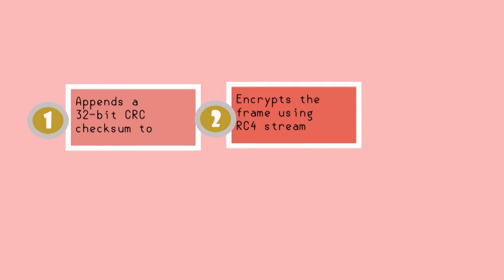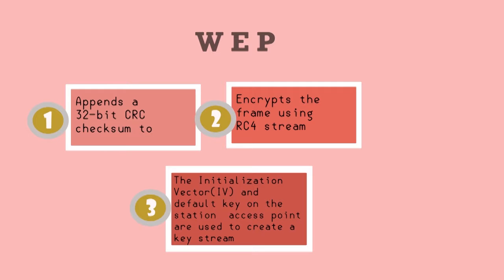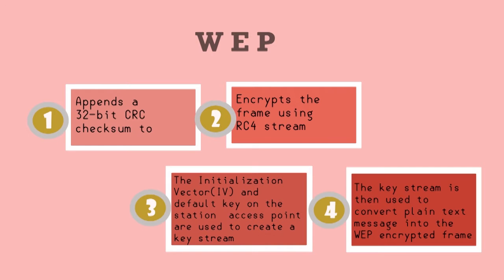Firstly, a 32-bit CRC checksum is appended to each outgoing frame. Secondly, the frame is encrypted using the RC4 stream cipher. Next, the initialization vector and default key on the station access point are used to create a key stream. Lastly, the key stream is then used to convert the plaintext message into the WEP-encrypted frame.